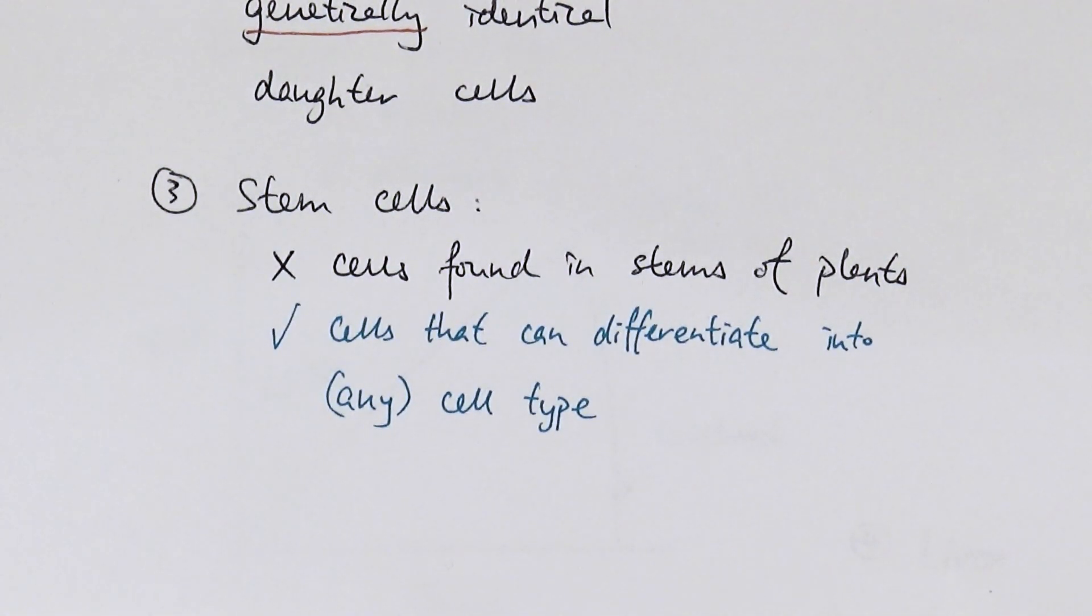There are different types of stem cells, okay, totipotent, pluripotent, multipotent, etc. And they can be found in different stages throughout your life, so either when you're an embryo or when you're an adult.